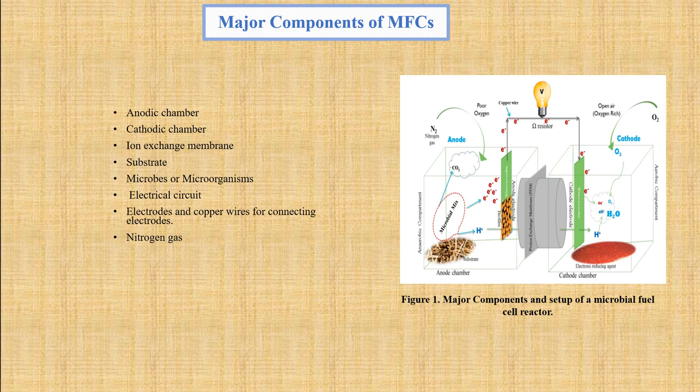Next, the major components of microbial fuel cells. The components and setup of a microbial fuel cell are represented in Figure 1. These are: anodic chamber with anaerobic conditions, cathodic chamber with aerobic conditions, a proton-exchange membrane separating the two chambers, substrate for microorganism metabolism, pure or mixed microorganisms for oxidizing substrate and forming biofilm at electrodes, an electrical circuit for transferring electrons from the anode to the cathode, nitrogen gas to maintain anaerobic conditions in the cathodic chamber, and oxygen or air to accept electrons as the reducing agent.